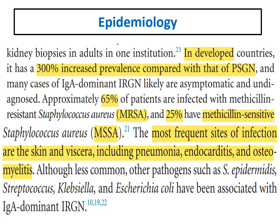IgA dominant infection-related GN is commonly undiagnosed but is increasing in frequency. In developed countries, it shows a 300% increase in prevalence compared to post-streptococcal GN — its incidence is much higher than post-streptococcal GN.